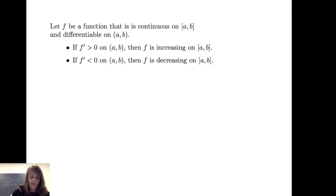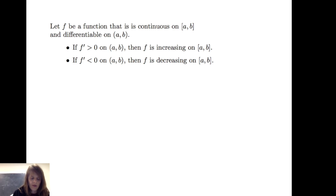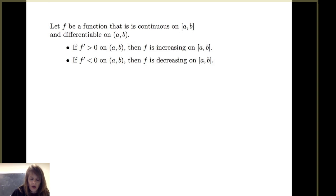Let f be a function that is continuous on the closed interval from a to b and differentiable on the open interval from a to b. If f prime is greater than 0 on the open interval from a to b, then f is increasing on the closed interval from a to b. If f prime is negative on the open interval from a to b, then f is decreasing on the closed interval from a to b.